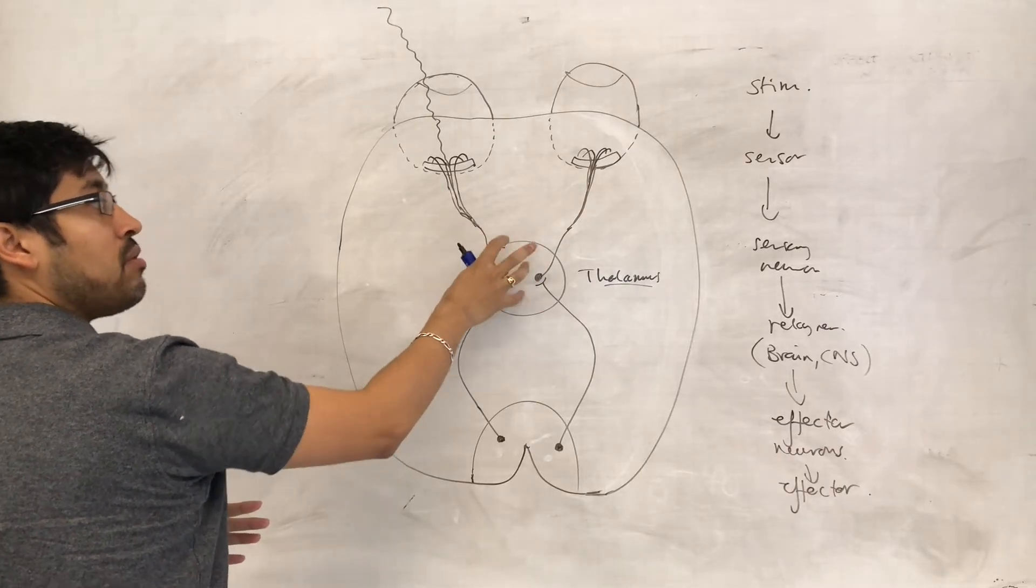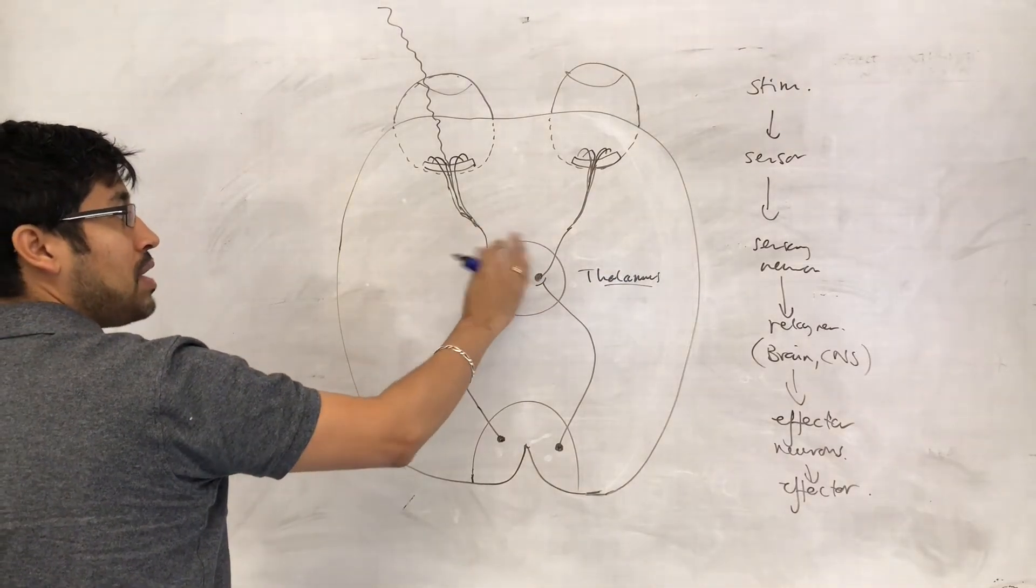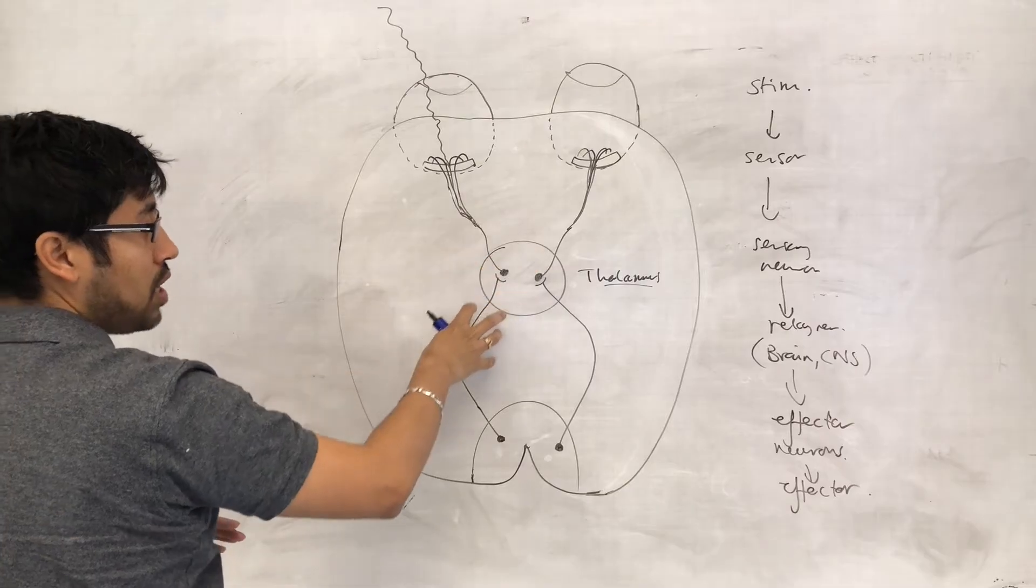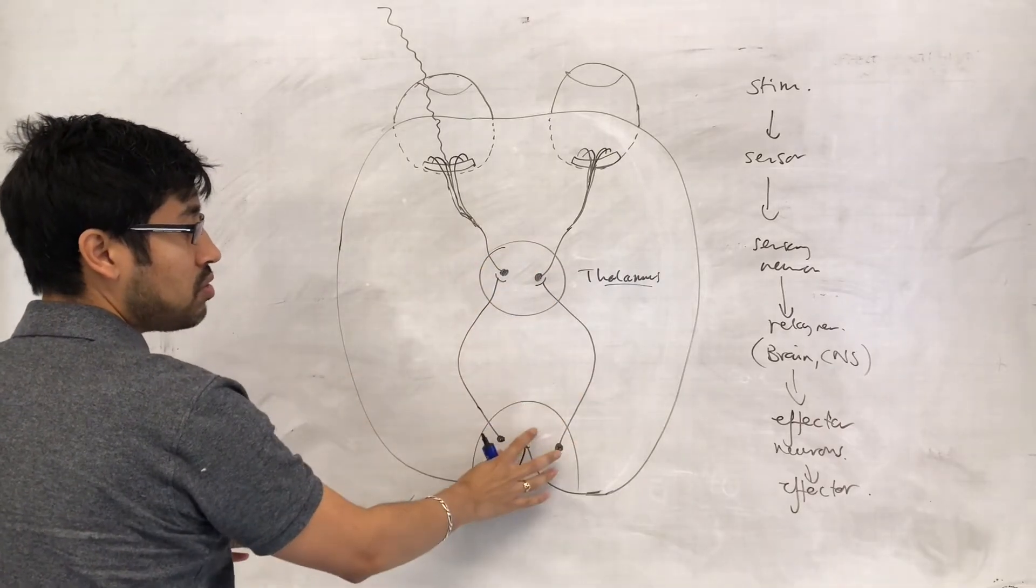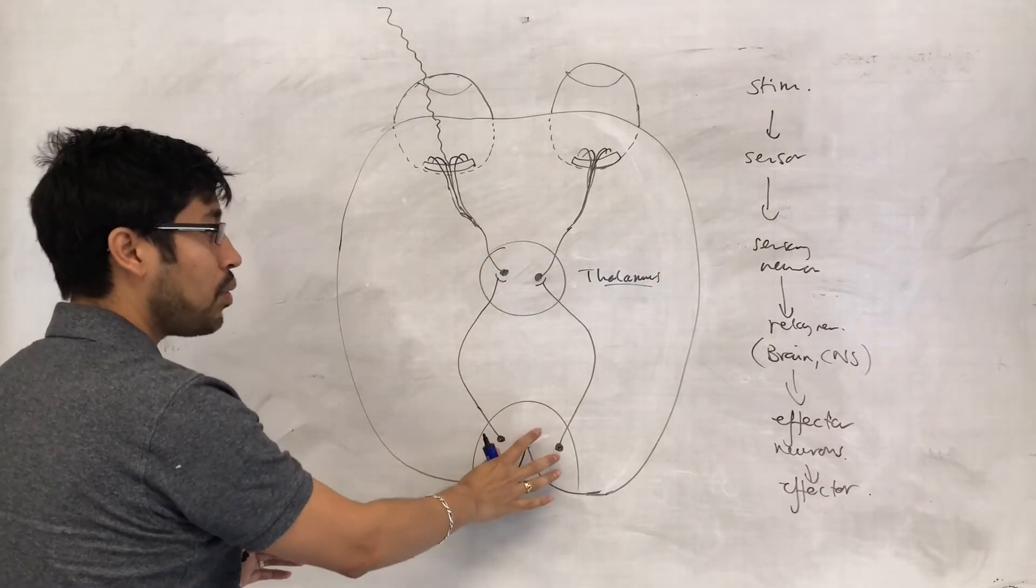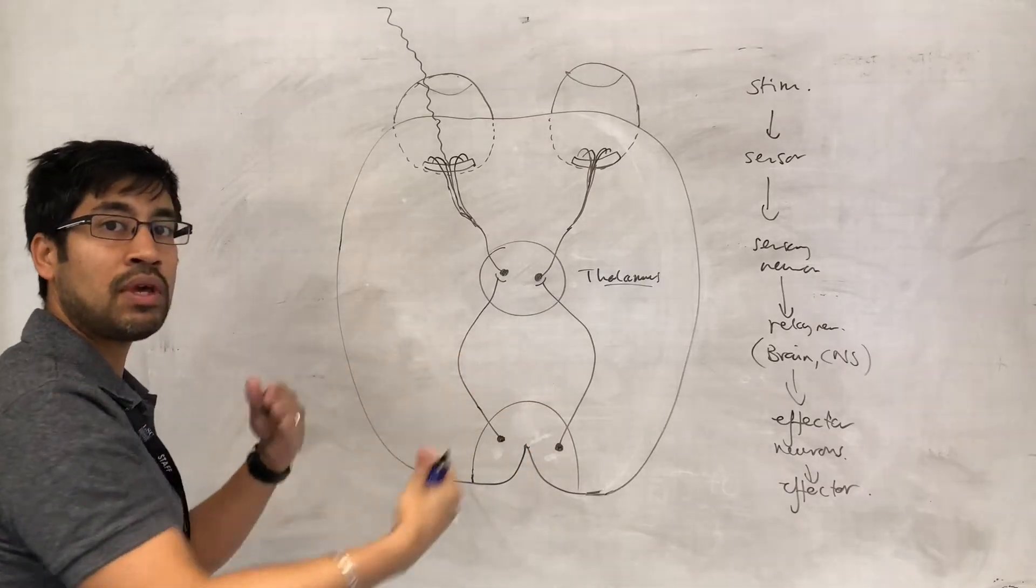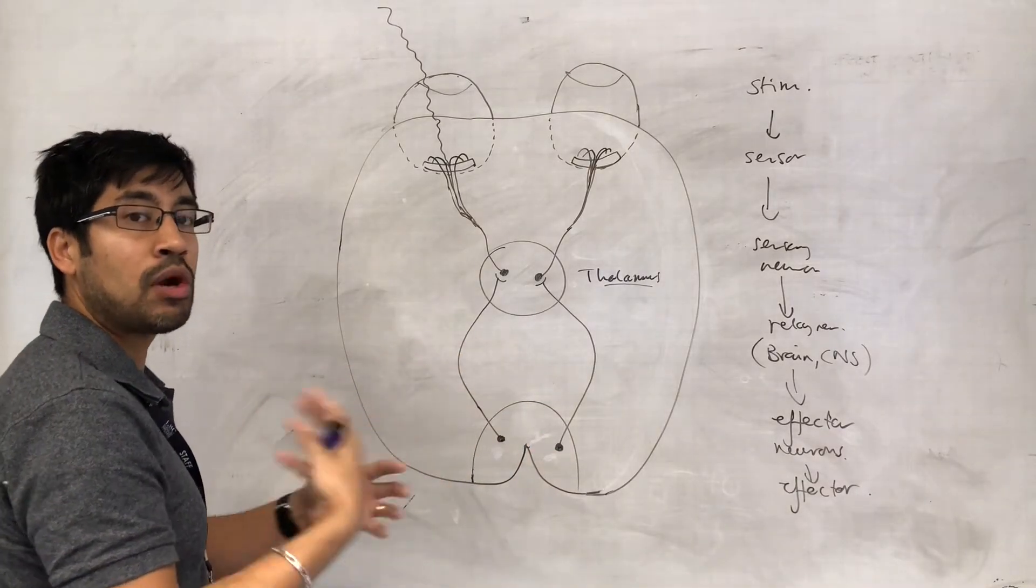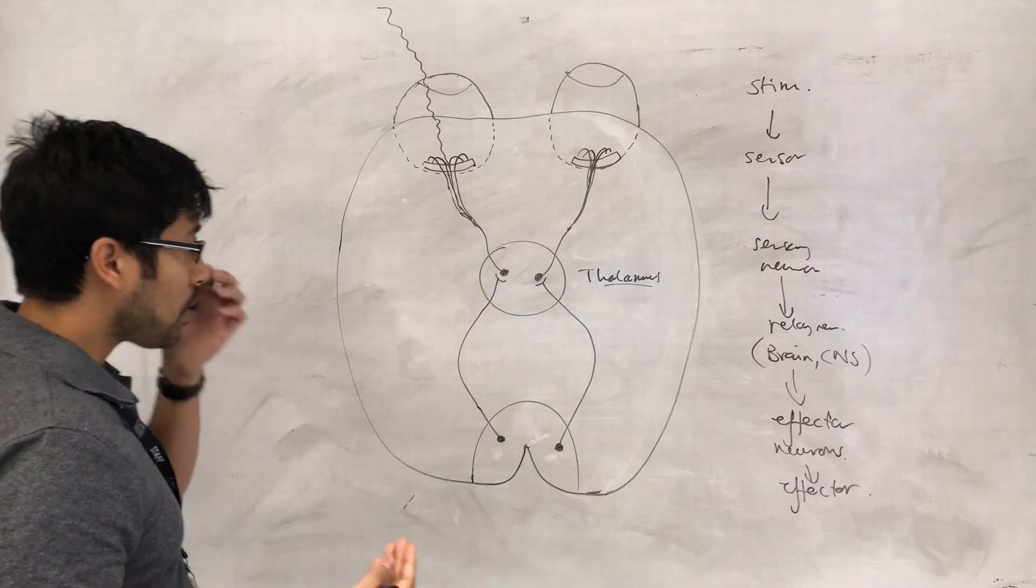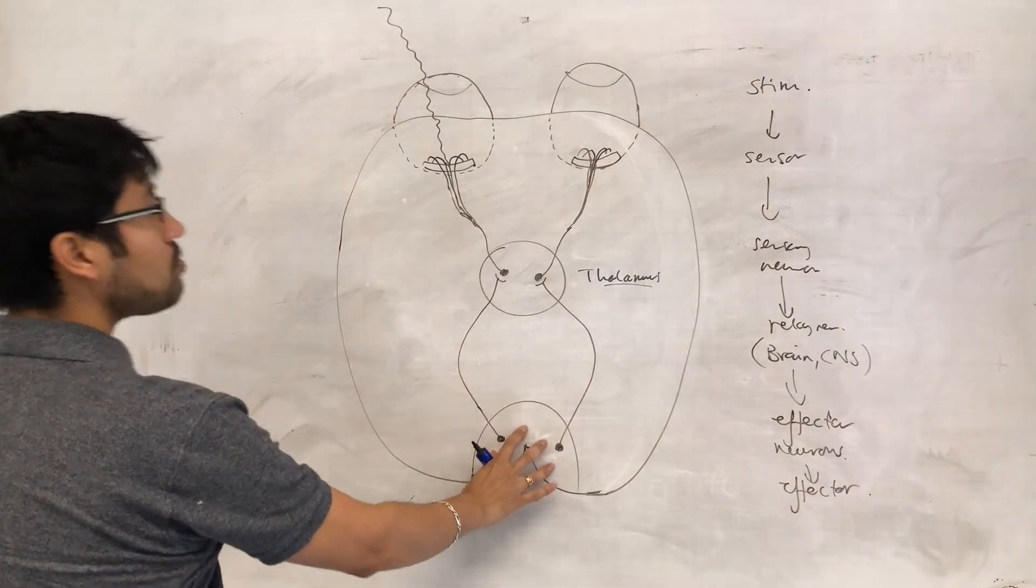And so when the thalamus receives impulses from the optic nerve, it knows that this is optical information, this is image-based information, and so the information must be routed to the visual processing center where that information is going to be interpreted as an image.